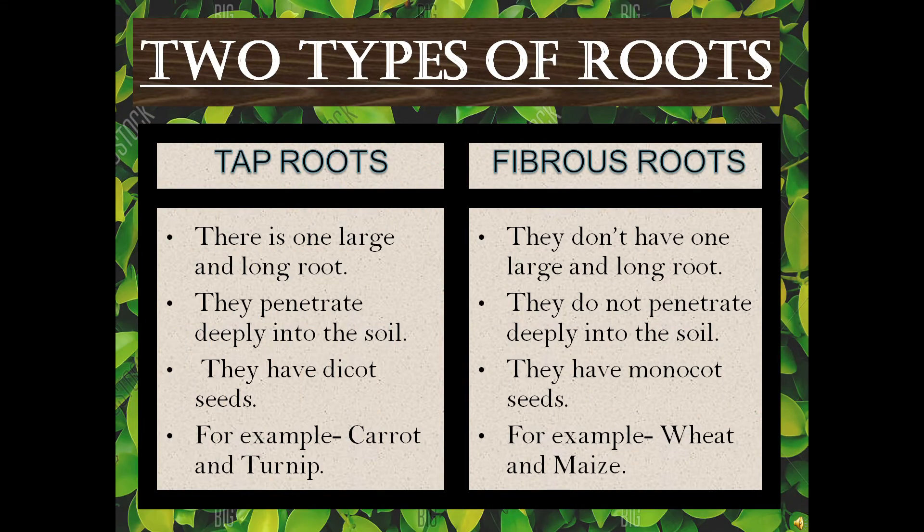There are two types of roots: taproot and fibrous root. Taproot: first, there is one large and long root; second, they penetrate deeply into the soil; third, they have dicot seeds. Examples are carrot and turnip.